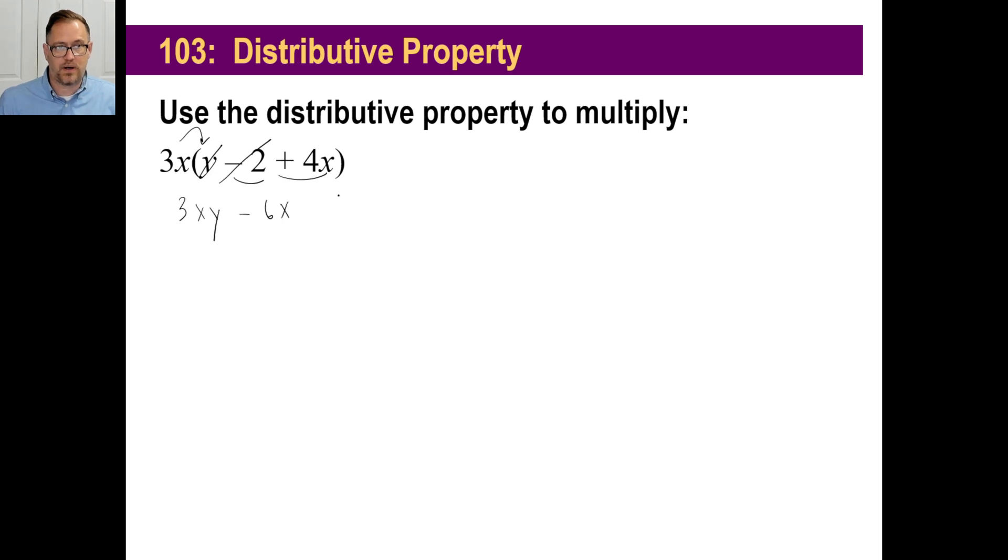Now, we have 3x times 4x. Well, let's do the 3 times 4 first is 12. And, if you want to go over here and go, okay, well, x times x. x to the first times x to the first. Oh, that's x to the second. You're going to add those, okay? These are not, again, like terms. These are different. That is an x squared. That's just an x to the first. That's an x and a y.